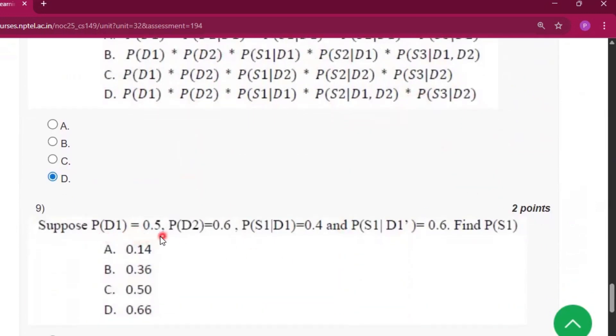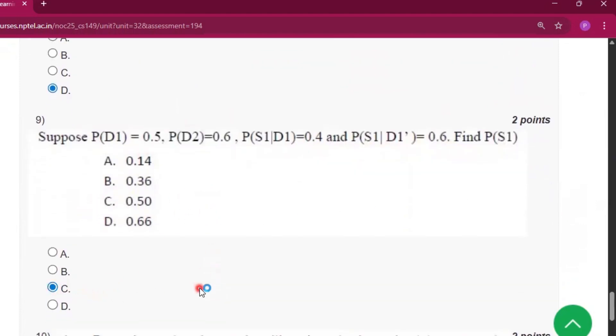Now suppose P(D1) is equal to 0.5, P(D2) is equal to 0.6, P(S1|D1) equals 0.4, and P(S1|D1') equals 0.6. Find P(S1). So the answer will be option C, that is 0.50.